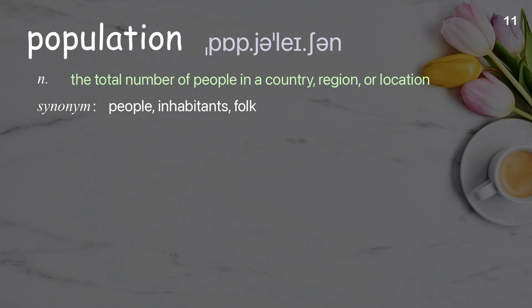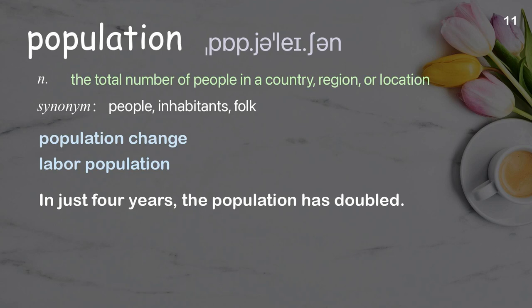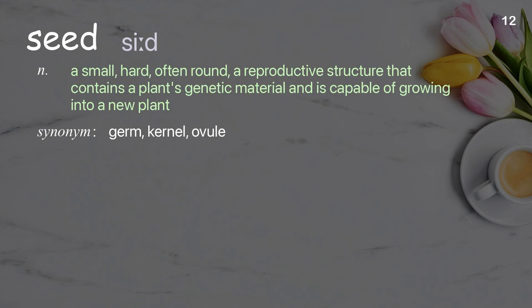Population: the total number of people in a country, region, or location. Seed: a hard, often round reproductive structure that contains a plant's genetic material and is capable of growing into a new plant.